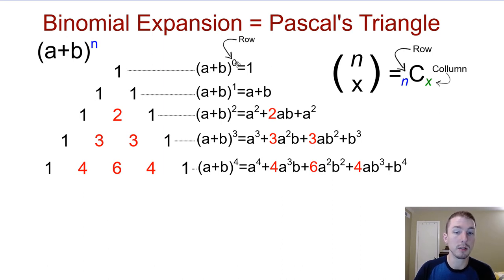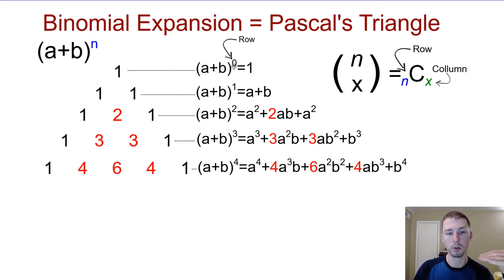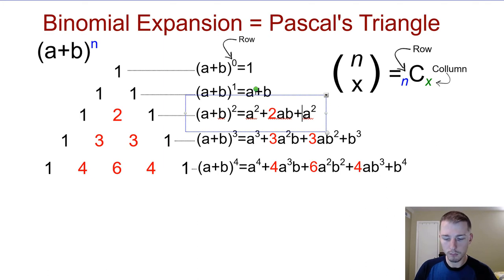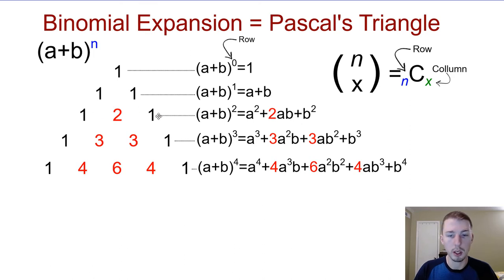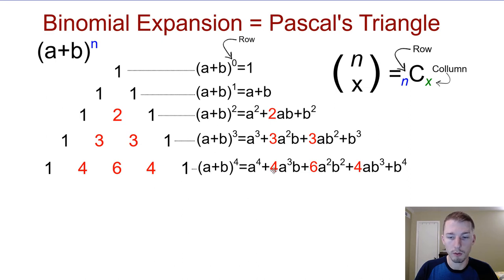For example: (a+b)^0 gives coefficient 1; (a+b)^1 gives 1a + 1b, coefficients 1,1; (a+b)^2 gives a² + 2ab + b², coefficients 1,2,1; (a+b)^3 gives coefficients 1,3,3,1; and (a+b)^4 gives coefficients 1,4,6,4,1. These match the rows of Pascal's triangle exactly. Pascal's triangle shows up all over mathematics — we also see it with the central limit theorem in statistics, which is related to the binomial.